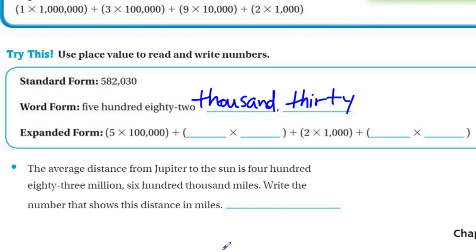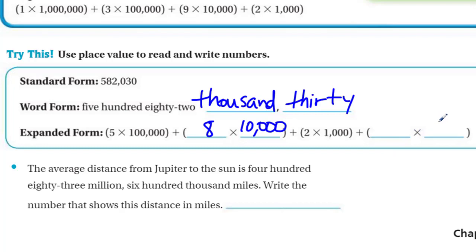Now expanded form: five times one hundred thousand, plus — looking at the next place value going into the ten thousands place — we put the digit eight, so eight times ten thousand. The two times one thousand is already there. The next place value is hundreds but we don't have anything there, so we ignore that. The 3 is in the tens place, so we put three times ten, which gives us the thirty.